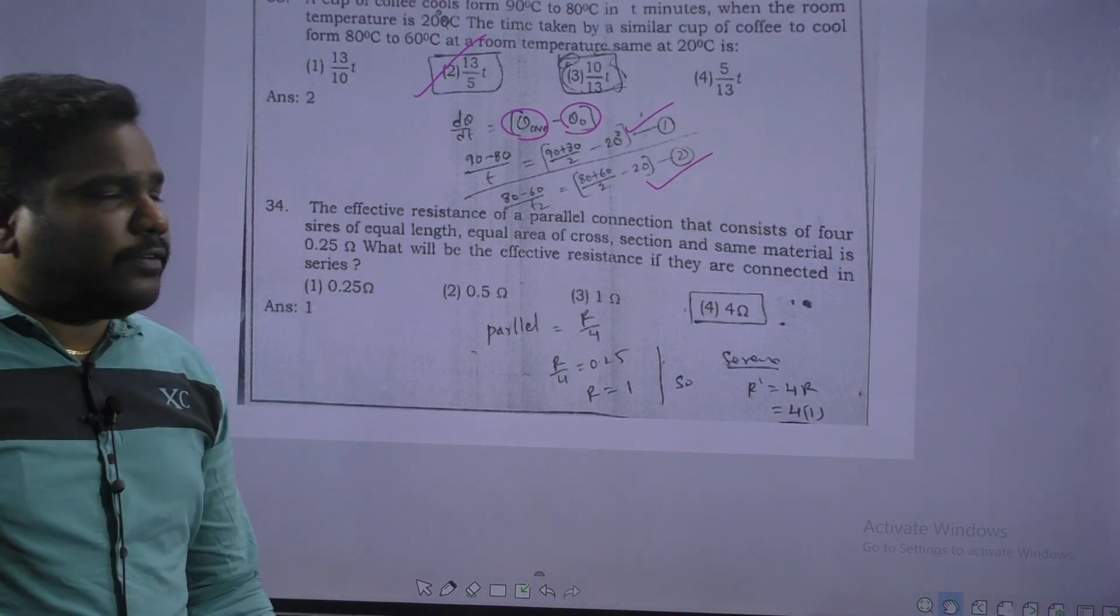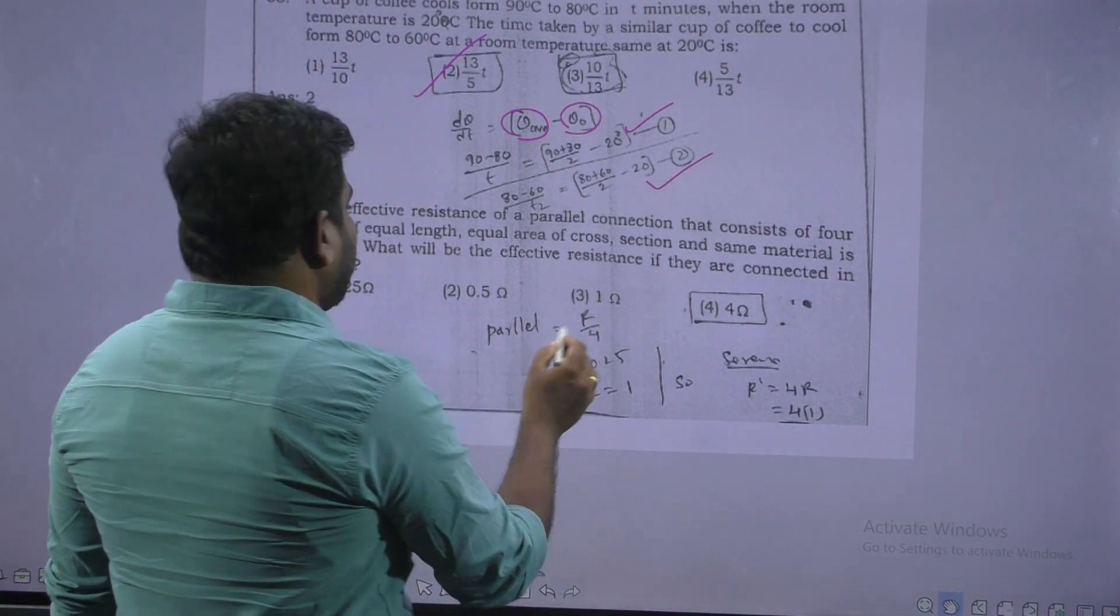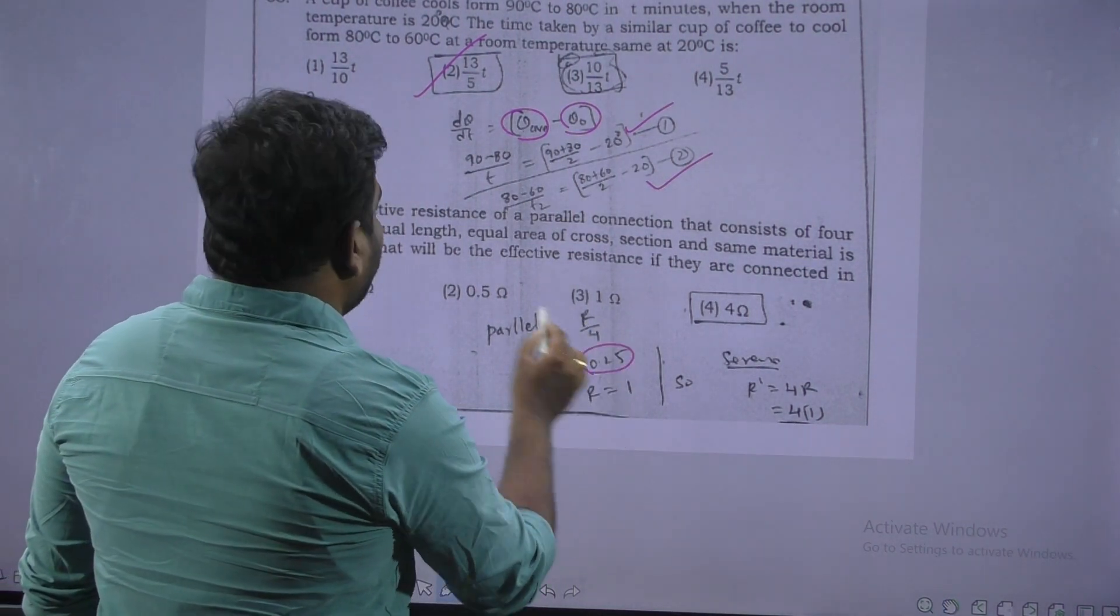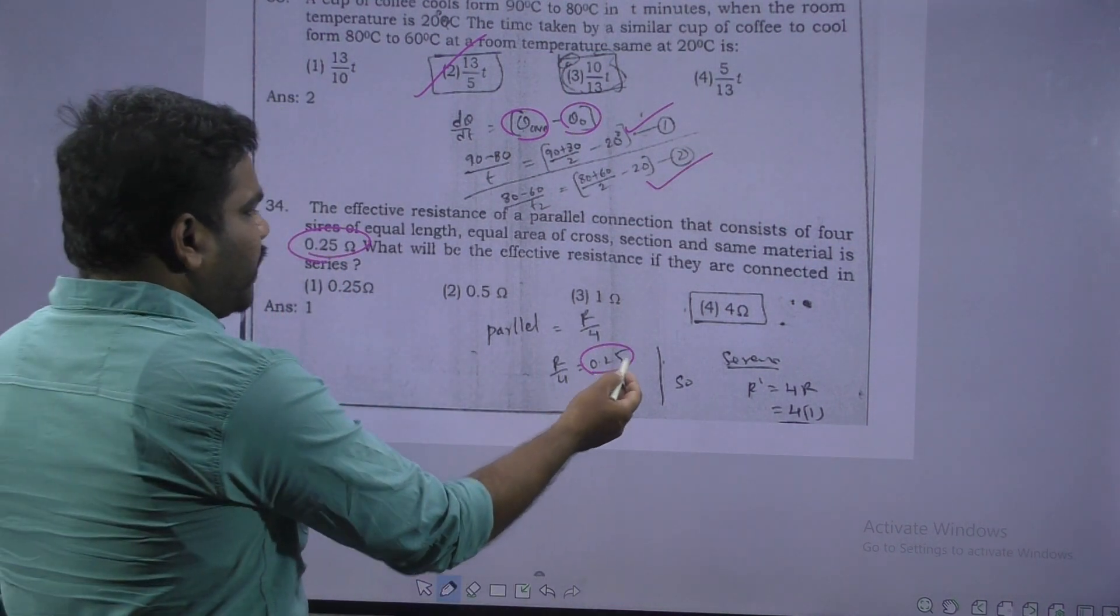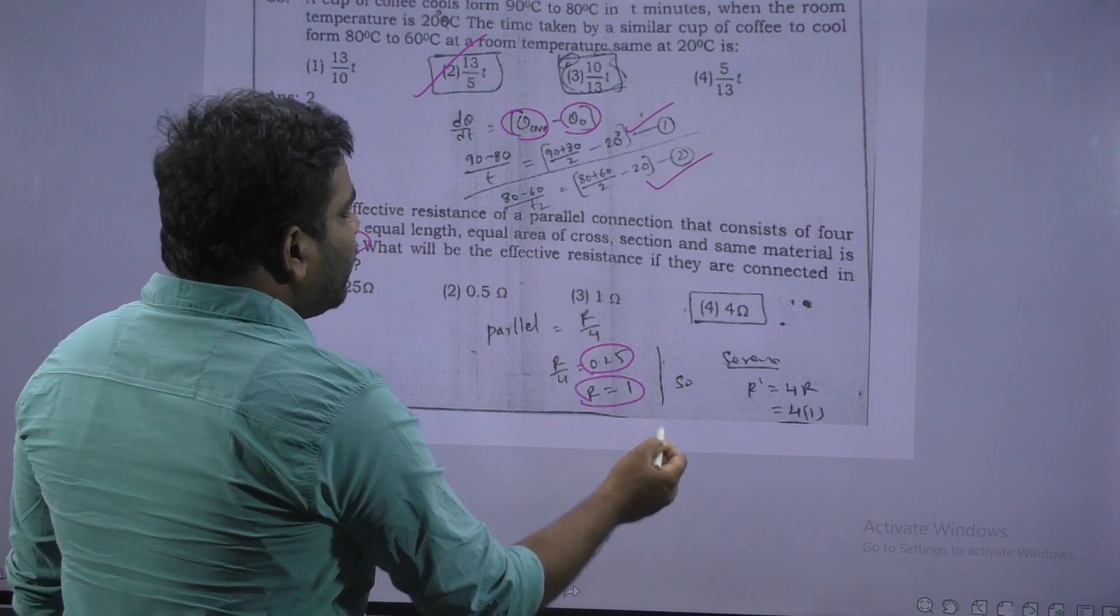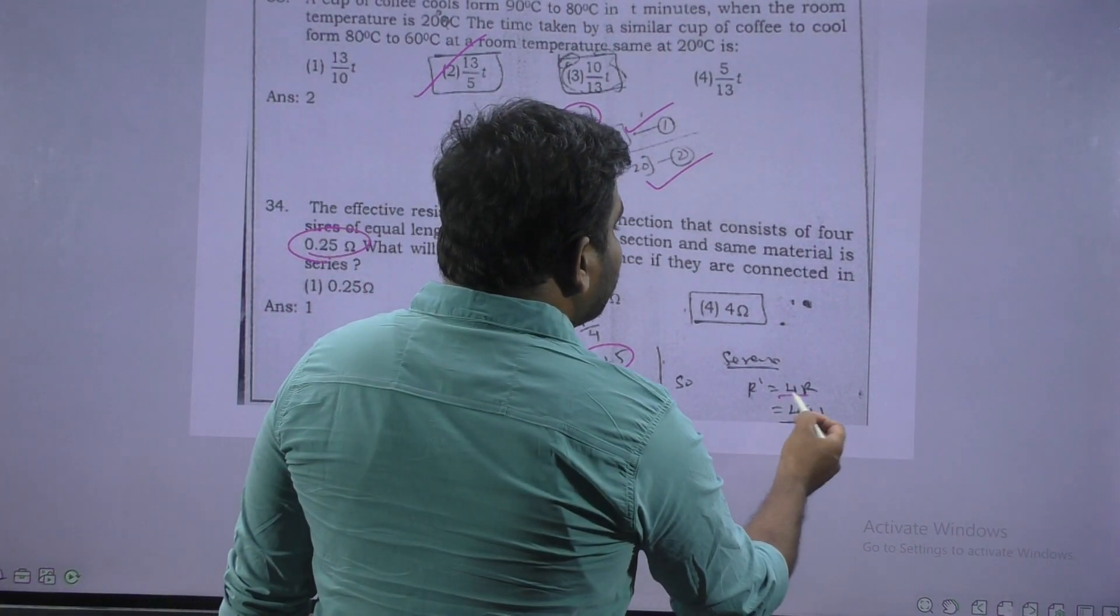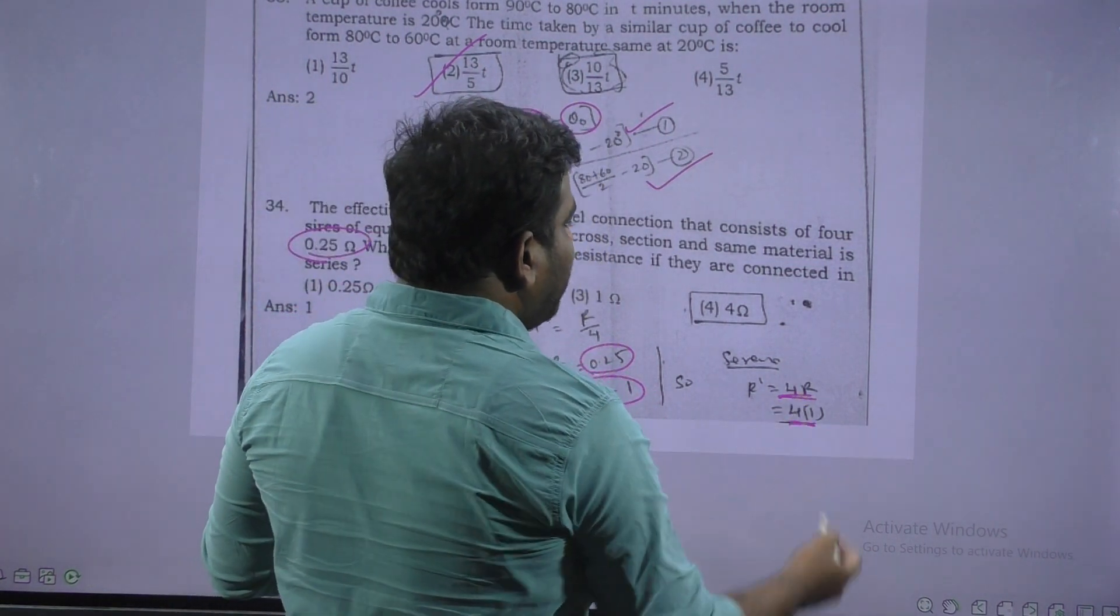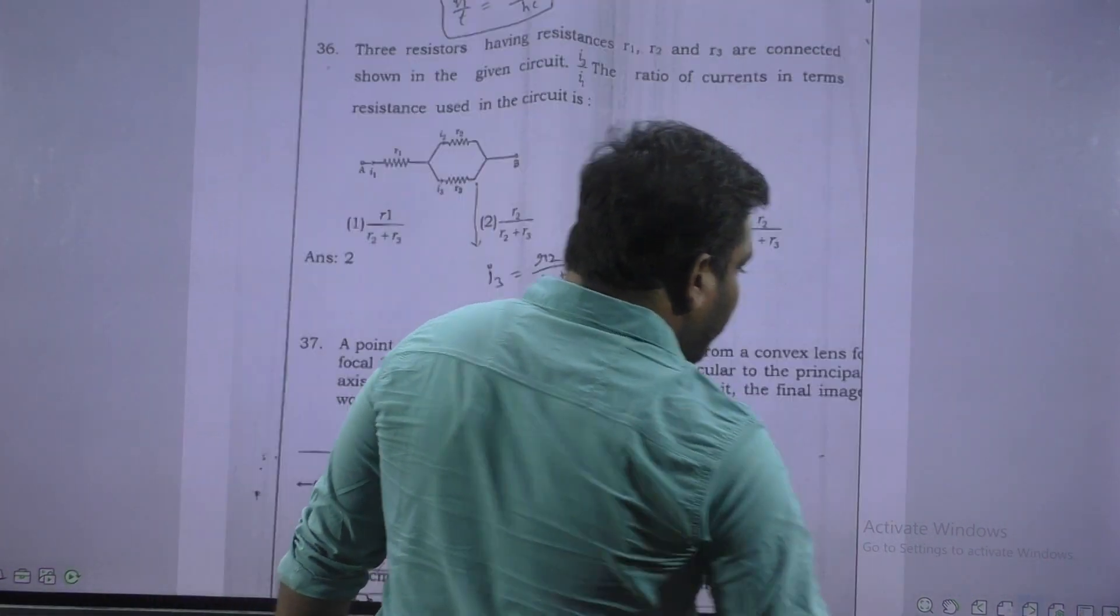Next. Resistors series parallel. They told that four resistors are connected in parallel. That is why R by 4. They are given already value 0.25. In parallel, four identical resistors 0.25. Cross multiply R is equal to 1. And again they are connected in series. So series, effective resistance 4R. From this equation R value 1. Substitute here 4 into 1. 4 is the effective resistance in series.